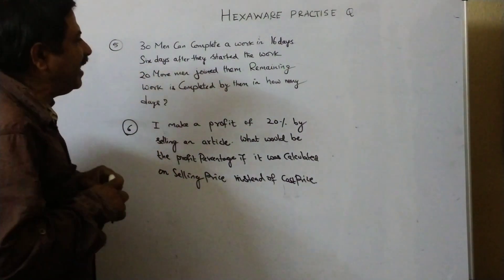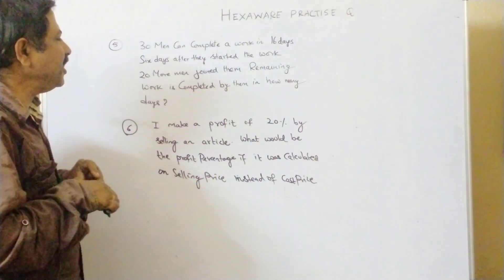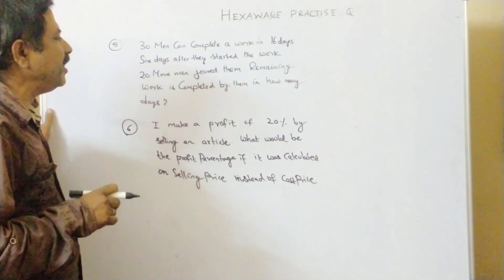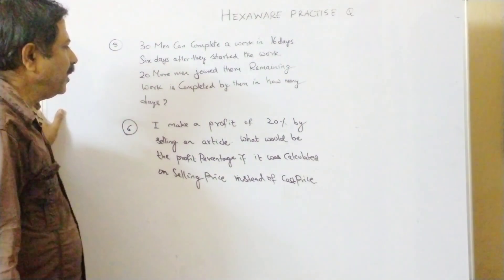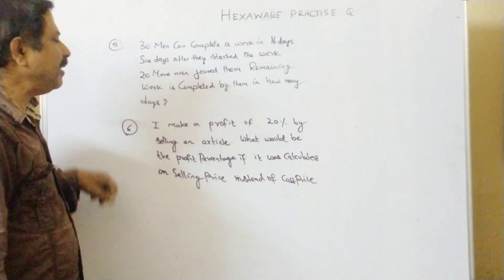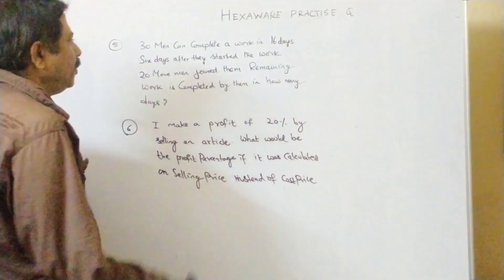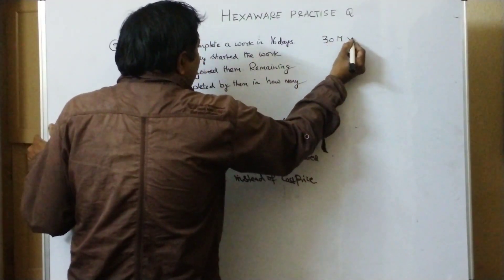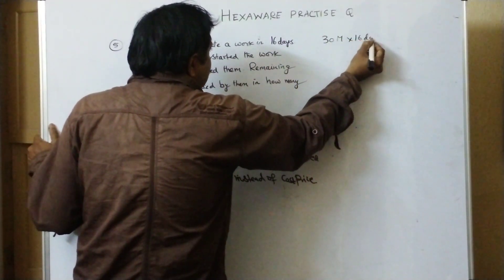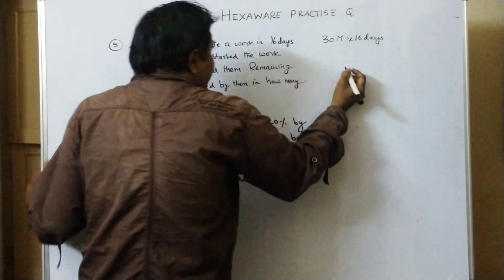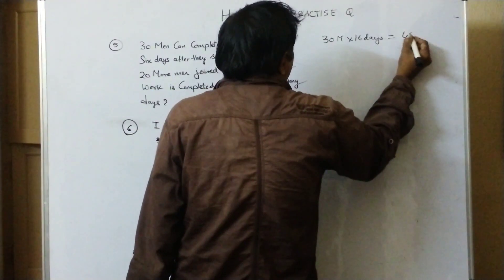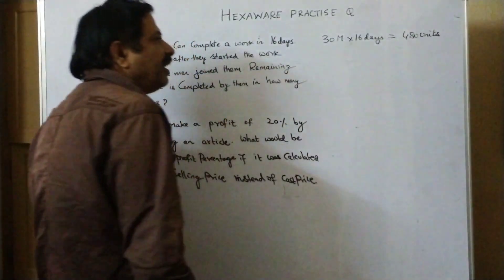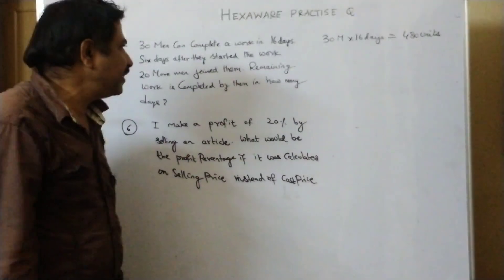Dear students, let us see the next one. 30 men can complete a work in 16 days. 6 days after they started the work, 20 more men join them. Remaining work is completed by them in how many days. Now, you know that 30 men are working 16 days. So 30 into 16, 480 units of work is completed by 30 men. By 30 men in 16 days, 480 units.